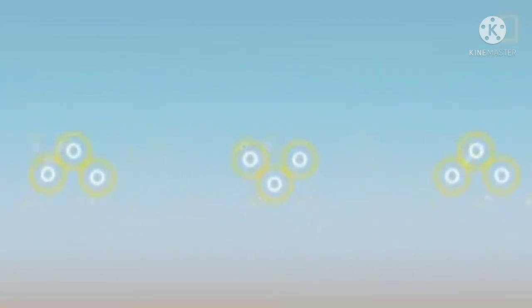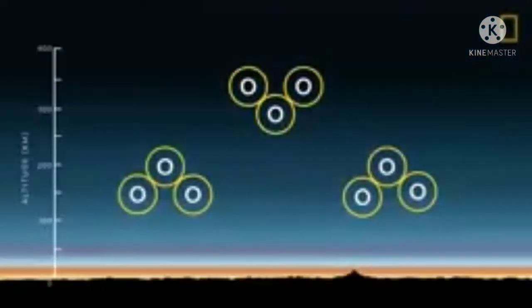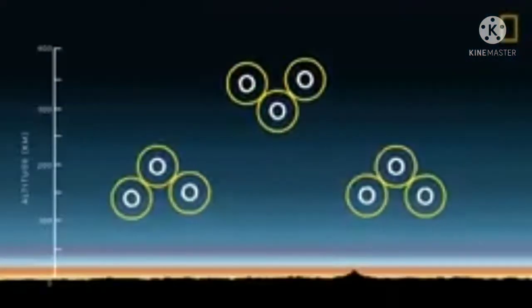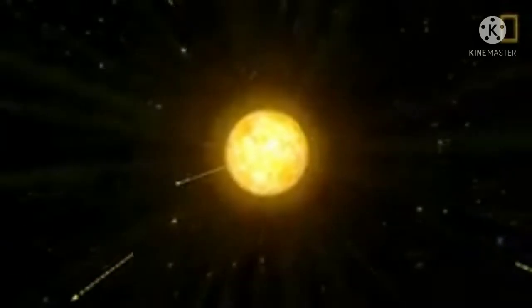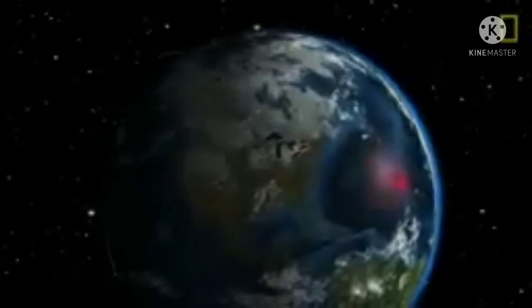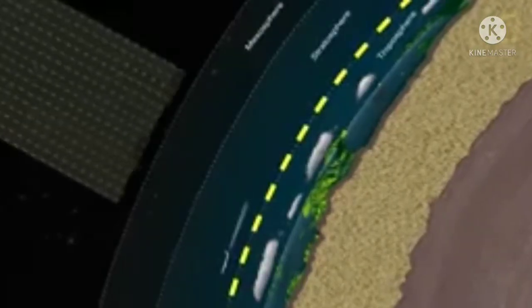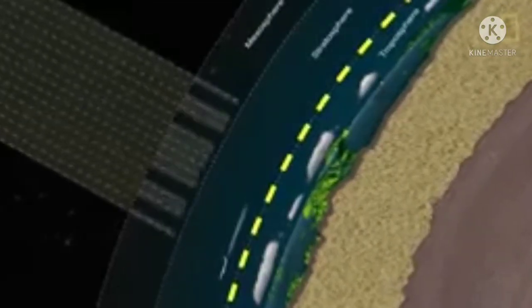Ozone is a trace gas in the atmosphere. There are only three ozone molecules for every 10 million molecules of air. But it doesn't vary — the ozone layer acts as the Earth's shield, absorbing solar radiation.